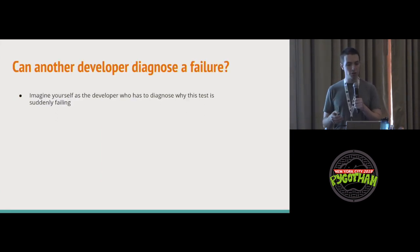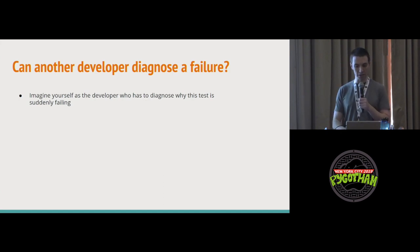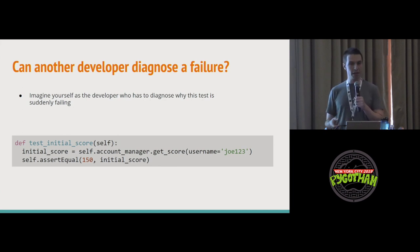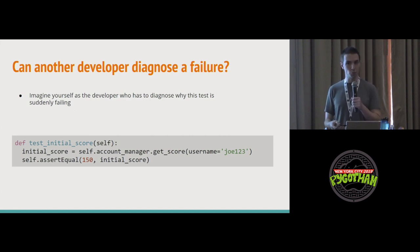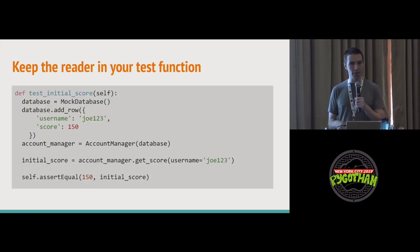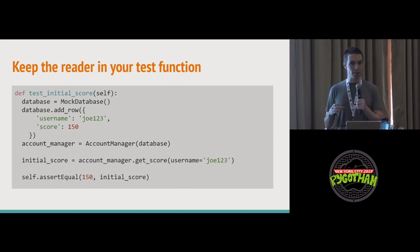Think about the next developer who has to come along and see a test fail. Will they understand why it failed and what they need to do to fix it? Coming back to the getScore unit test — if it fails and the number that comes back is 165, does another developer understand from reading just that test function why it's failing? No, because all they see is 150. There's a pretty simple fix: we can just inline the code that was in the setup method, so the reader can read that one function and have everything they need.